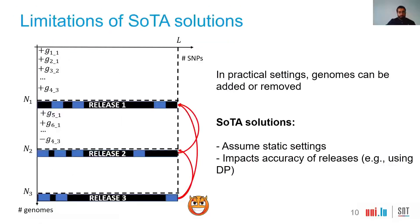However, in practical settings, genomes can be added or removed over time, and therefore we cannot use state-of-the-art solutions because they assume static settings. For example, in this illustration we show how an adversary can combine different releases from one study, observe how the statistics have evolved, and take advantage of this to circumvent these solutions.